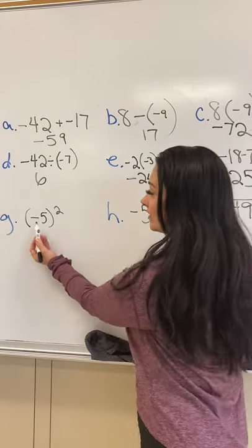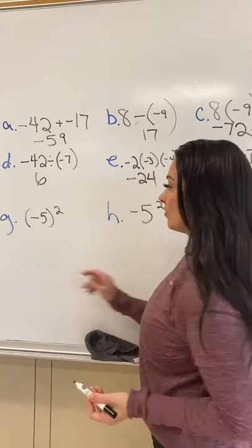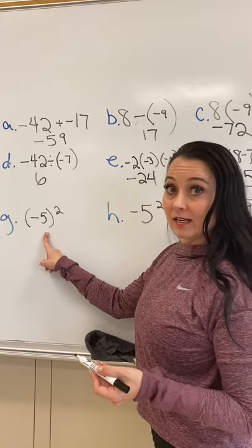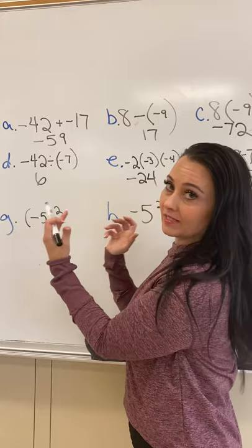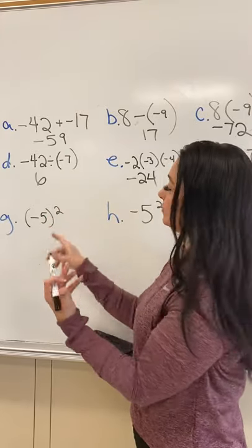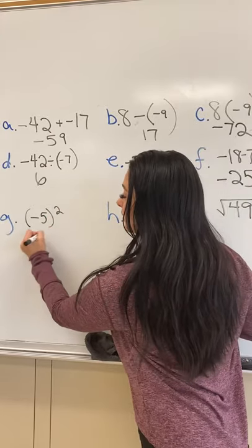G: negative 5 squared. The key thing here is that it's in parentheses, so that means we're doing negative 5 times negative 5. That's what negative 5 squared means, which is a positive 25.